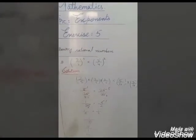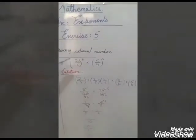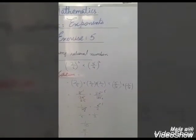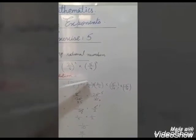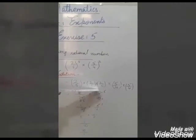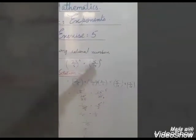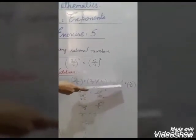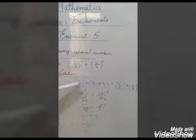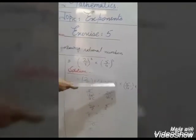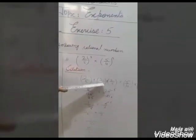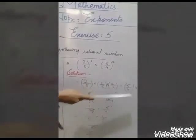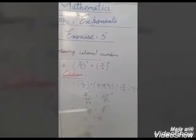Since the bases are not the same, the powers will not be added. So 2 by 5 whole power 3 means 2 by 5 multiplied 3 times: 2 by 5 multiplied by 2 by 5 multiplied by 2 by 5; and 5 by 4 whole power 2 means 5 by 4 multiplied 2 times. Simply multiply: 2 twos are 4, 4 twos are 8; 5 fives are 25, 25 fives are 125. So that gives 8 by 125. And 5 fives are 25, 4 fours are 16, giving 25 by 16.